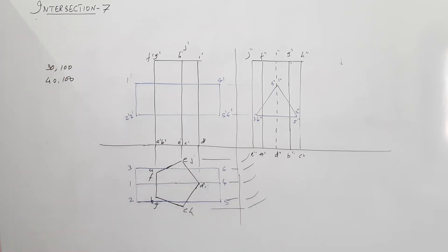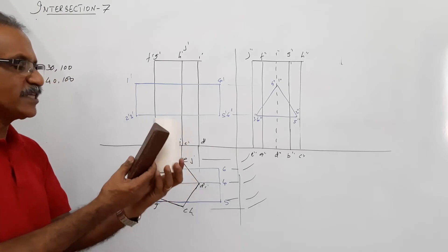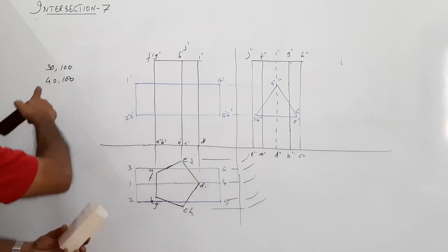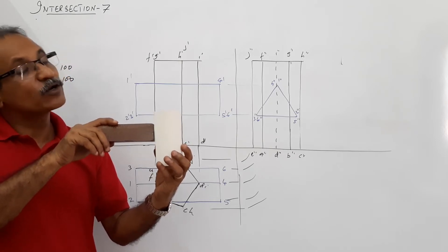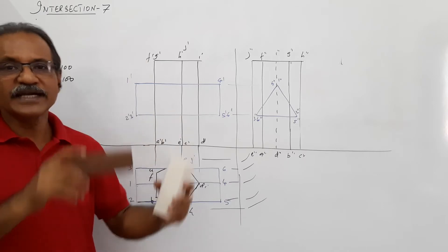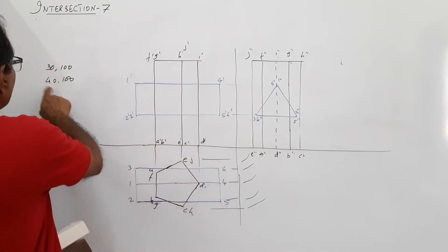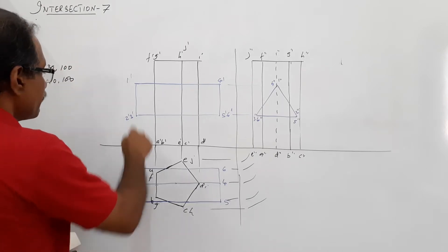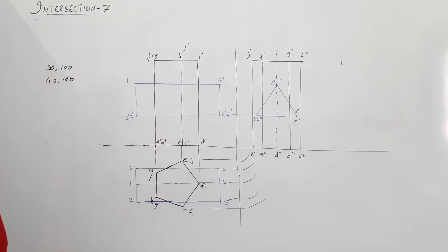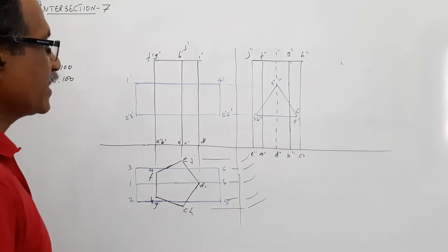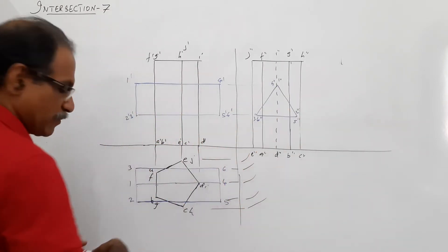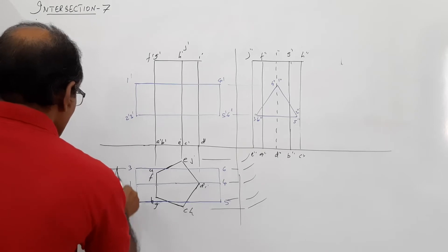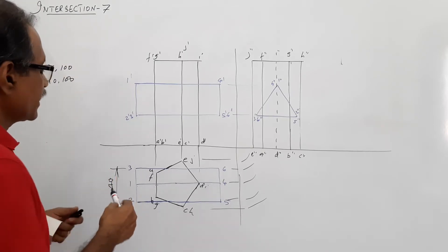This pentagonal prism is penetrated by a triangular prism passing horizontally through it, going through and coming out the other side. The triangular prism has a side of 40 mm. In plan it appears as a 40×80 rectangle passing through the center where the two axes intersect. In elevation you see the altitude of the isosceles triangle, and in the end view you see the equilateral triangle with side 40 mm.